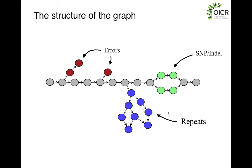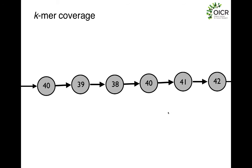Jared ended up writing a program to help estimate how difficult it is for a given assembly. This is the structure of a graph at the end of initial graph construction with short read sequences — you can see errors, SNPs and indels giving you bubbles, and repeats giving you those unresolvable loops. The program assesses k-mer coverage: for every given k-mer, how many reads contain it? We throw out really rare k-mers just like in error correction. A good, easily assembled genome would show a normal distribution of k-mers, with a very small tail at low counts corresponding to sequencing artifacts.